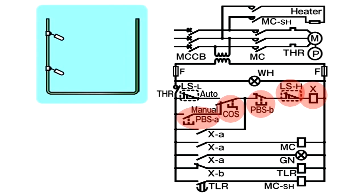As a result, X-A is turned on, and the current begins to flow from X-A to P-B-S-B, L-S-H, and to X. Therefore, even though the finger is removed from P-B-S-A, X continues to be excited. This state is known as the self-holding state of X.